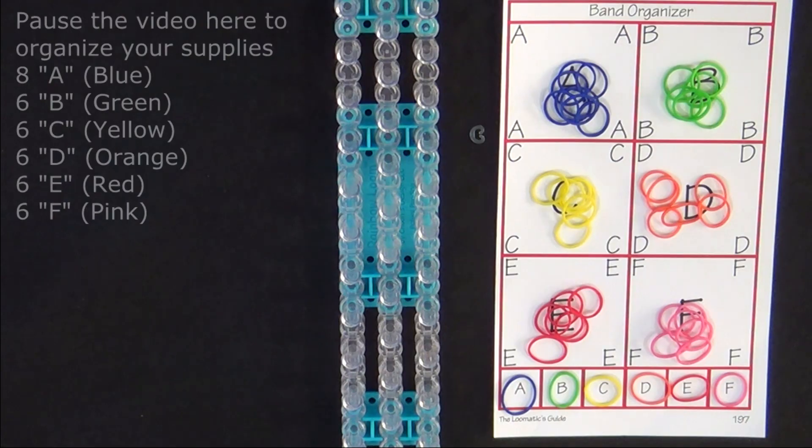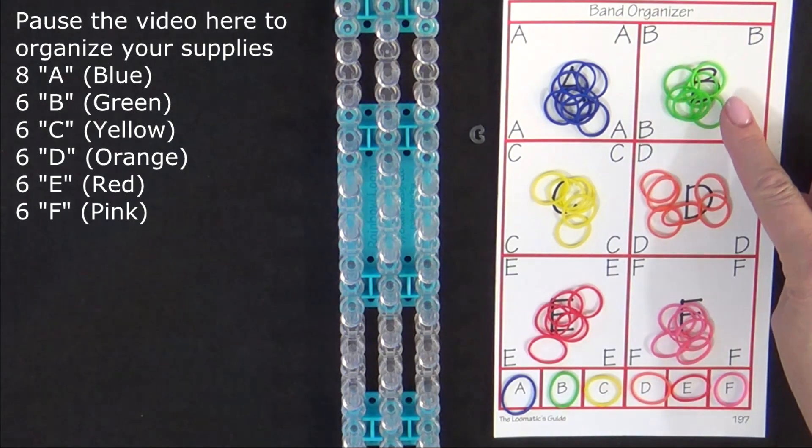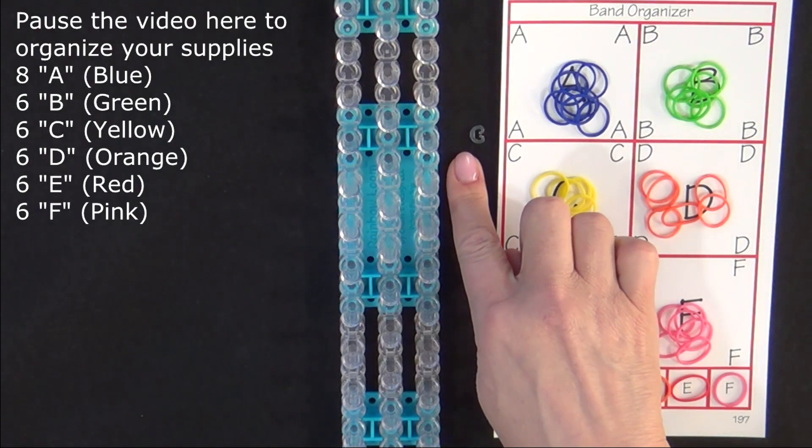To make this bracelet you will need 8 A colored bands and 6 each of B, C, D, E, and F. You'll also need a C clip.